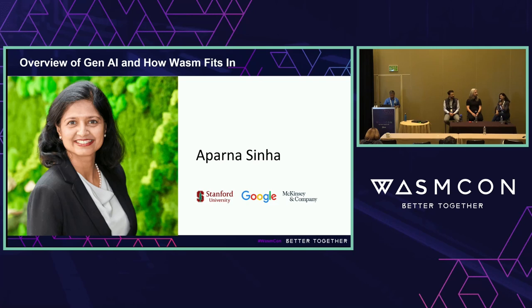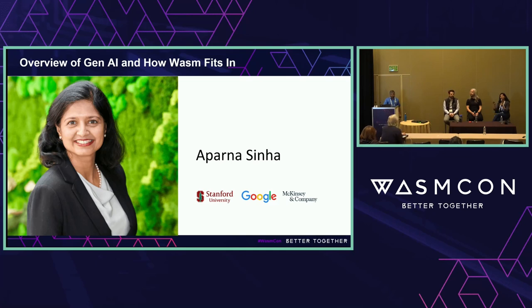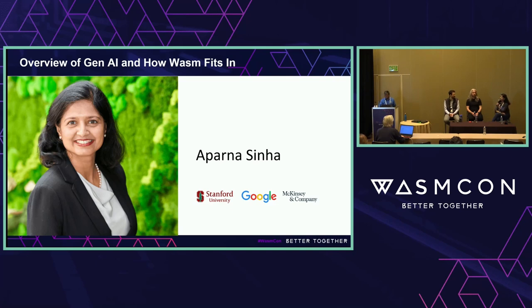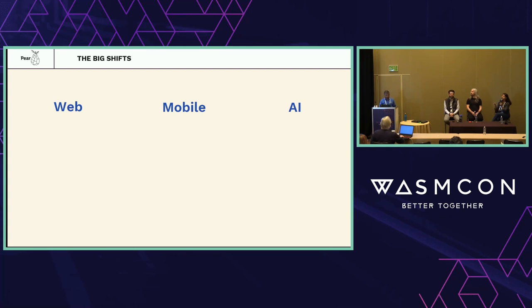I'm kind of an accidental venture capitalist. I was an operator at Google. When I started at Pair as an entrepreneur in residence, generative AI was just starting to take off. One of the things I'd been working on at Google was using AI models to generate code and make developers more productive in Google Cloud. At Pair, they asked me to put together our thesis on generative AI — we were seeing upwards of 10 startups a week all focused on it. The startups we see are going from idea to product-market fit, zero to one.